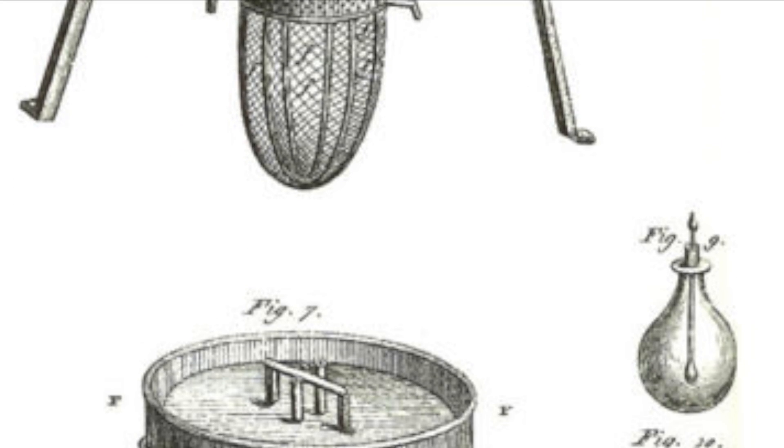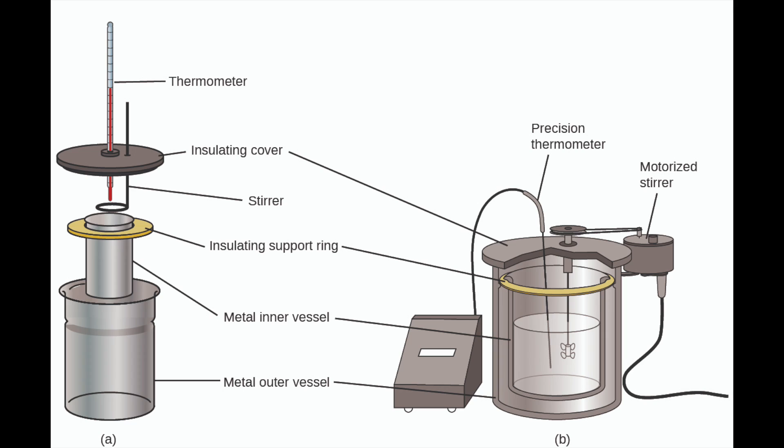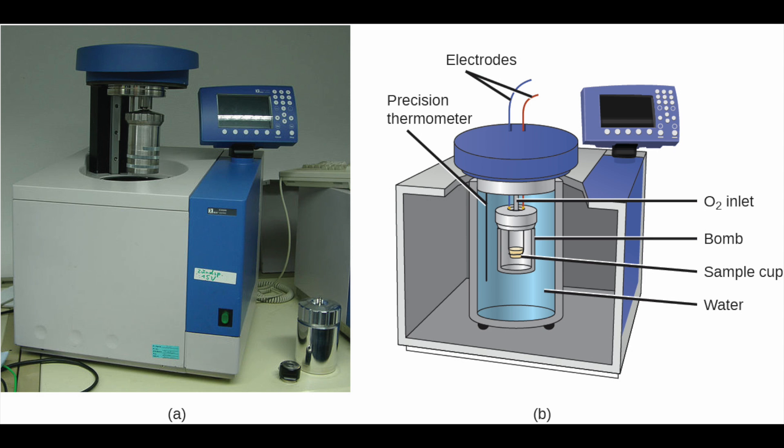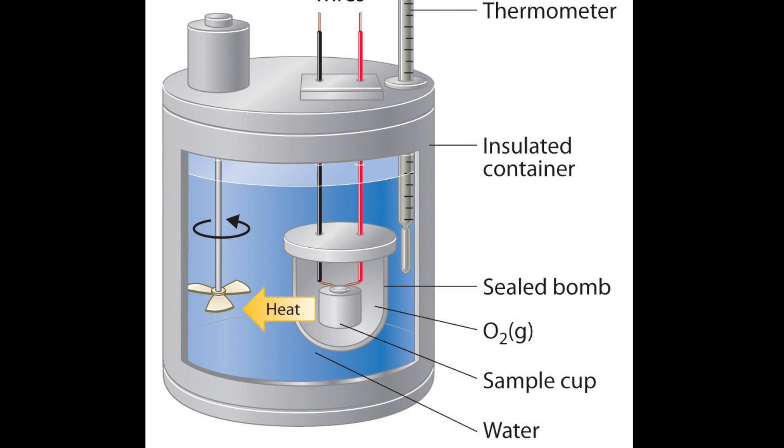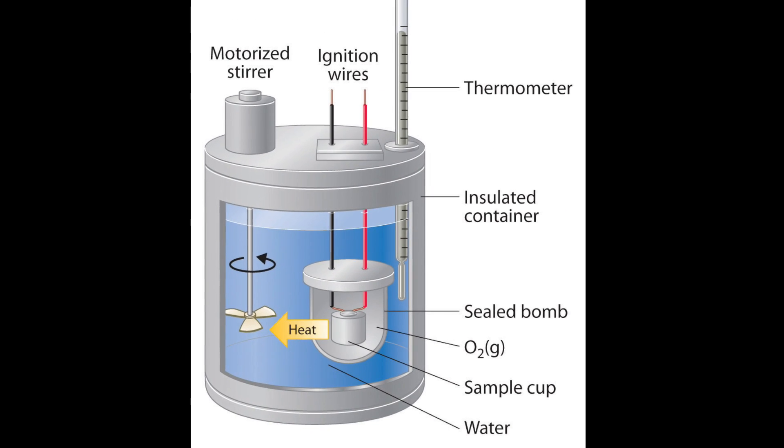Now, in modern times, calorimeters are much more precise and diverse, with many different types in common use, each designed to keep certain variables constant, and each with its own degree of accuracy. A common specialized calorimeter you're likely to hear about is the bomb calorimeter. A bomb calorimeter is designed to keep the volume of a system constant, and is generally used to measure the heat of a combustion reaction.